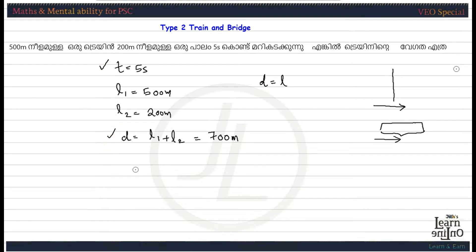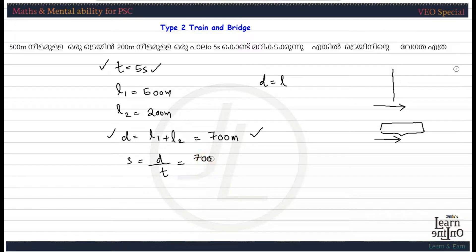Time and distance — speed is equal to distance divided by time. If we do this calculation, we will match the unit. Distance is meter and time is second, and meter and second are matching. We have a division from the diagram: 700 meters divided by 5 seconds, this is 160 meters per second.